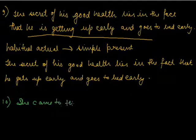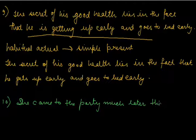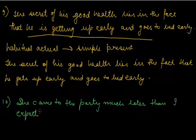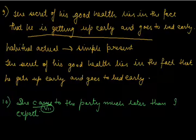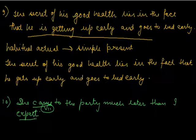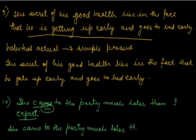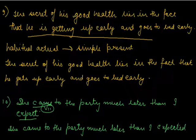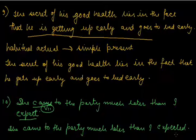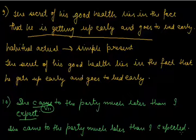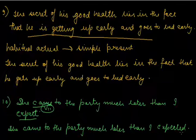Next question: She came to the party much later than I expect. The action is of the past, and came already denotes simple past. If one verb is in the past, the expectation would also be of the past. So the correct answer is: She came to the party much later than I expected. When the event is in the past, everything must be expressed in past form. I hope all these common mistakes in error-spotting exercises are now clear. Thank you.